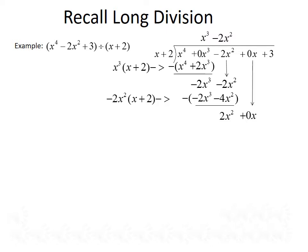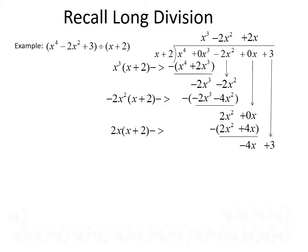We bring the next term from the dividend down, giving us 2x squared plus 0x, and go through another round. What do we have to multiply x by to give us 2x squared? That would be positive 2x. We multiply 2x times x plus 2, giving us 2x squared plus 4x, which we subtract from above, giving us 0 minus 4x. We bring down the last term, so we have negative 4x plus 3. What do we multiply x by to get negative 4x? That's negative 4. Negative 4 times x plus 2 gives us negative 4x minus 8, which we subtract from above, giving us 11. Since the degree of 11 is less than the degree of our divisor, this is our remainder.